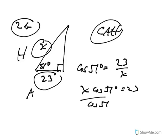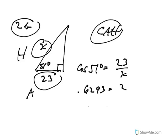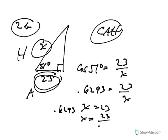Looking up cosine 51 on the trig chart, it's 0.6293. That means the adjacent side is about 63% as big as the hypotenuse, so the hypotenuse is bigger. Cross-multiplying: 0.6293x = 23, so x = 23 ÷ 0.6293, which is about 36.5.